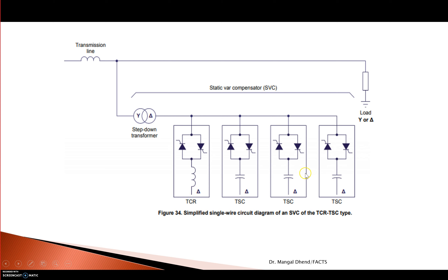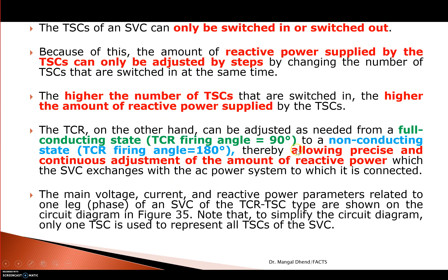Suppose you want to supply 25 KVAR. When 2 TSC banks are on they supply 20, but the third bank would add 10 giving 30. So switch the third TSC on making total 30, then use TCR to generate 5 KVAR, giving 30 minus 5 equals 25 KVAR. Like this, smooth control can be achieved with TCR in combination with TSC.